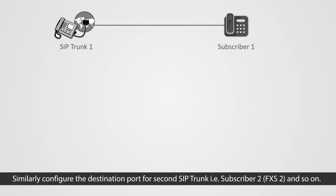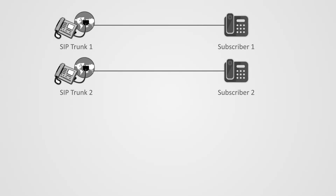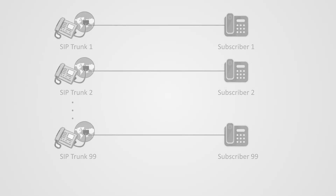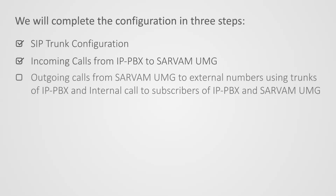Similarly configure the destination port for the 2nd SIP trunk, i.e. subscriber 2 or FXS2, and so on. This completes the 2nd step. Let us move on to the 3rd step to configure outgoing calls from Servum UMG to external numbers using trunks of IP PBX, and internal calls to subscribers of IP PBX and Servum UMG.